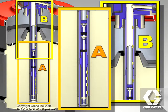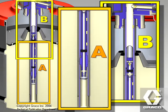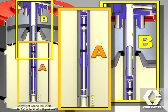On the next downstroke, the lower check closes and the upper check opens. As the pump piston moves down, the grease transfers past the upper check.